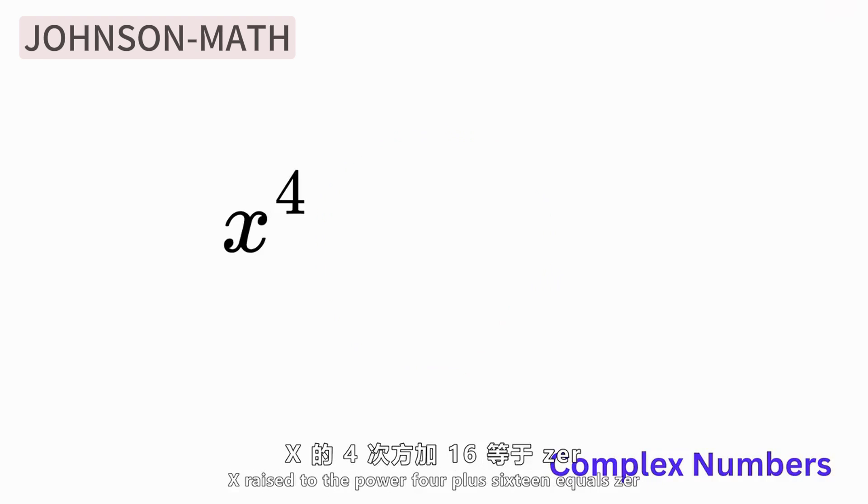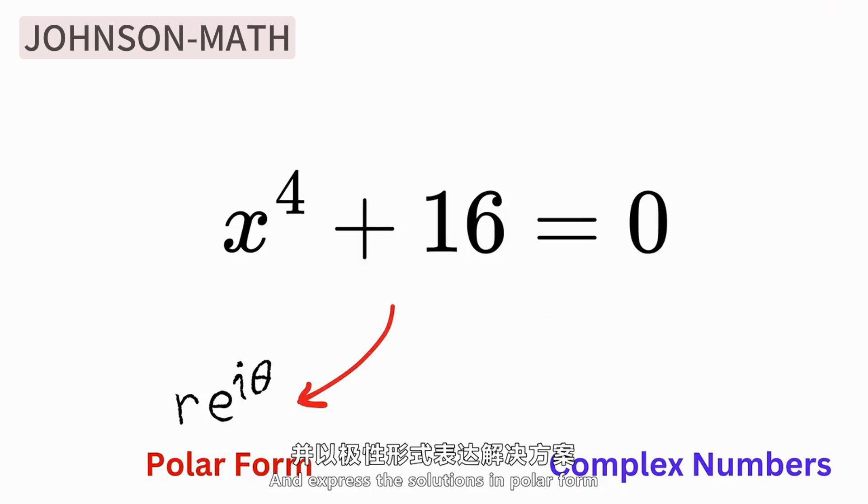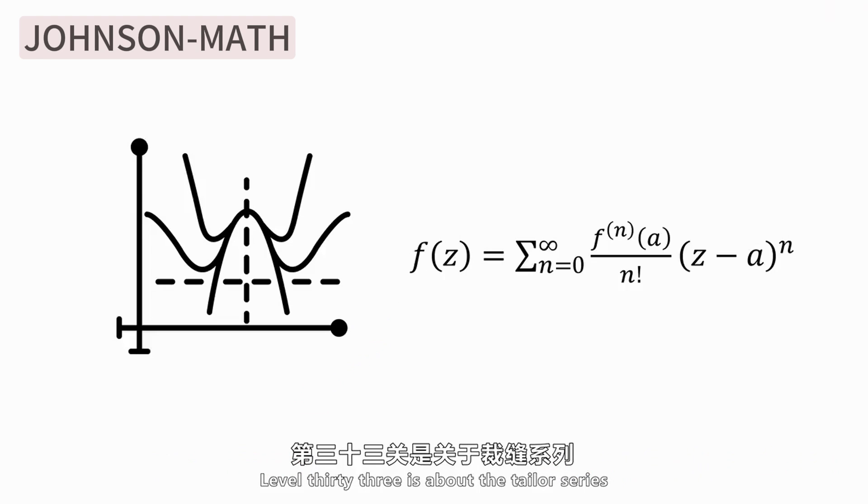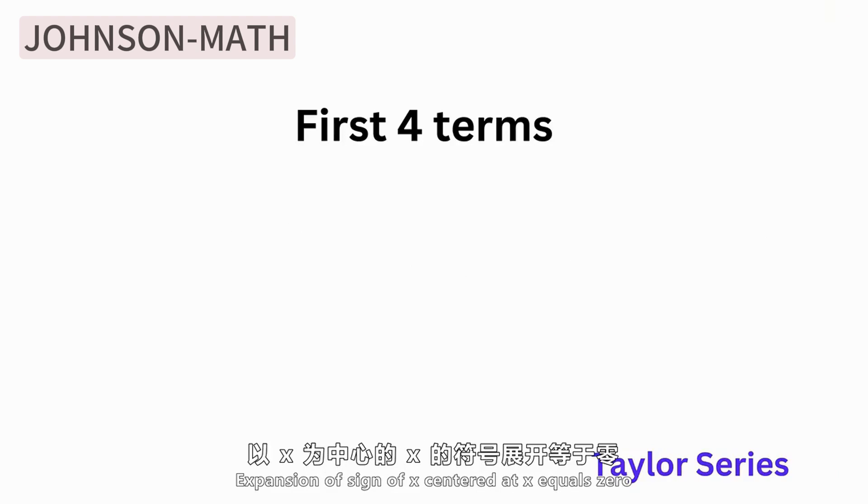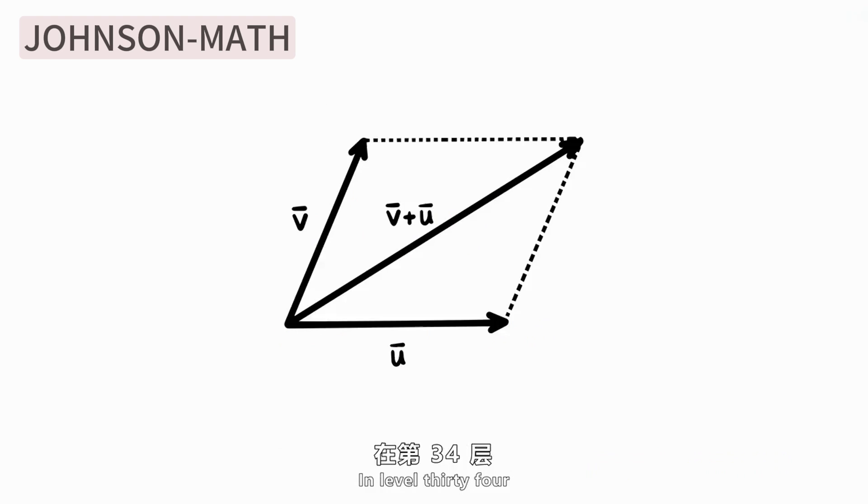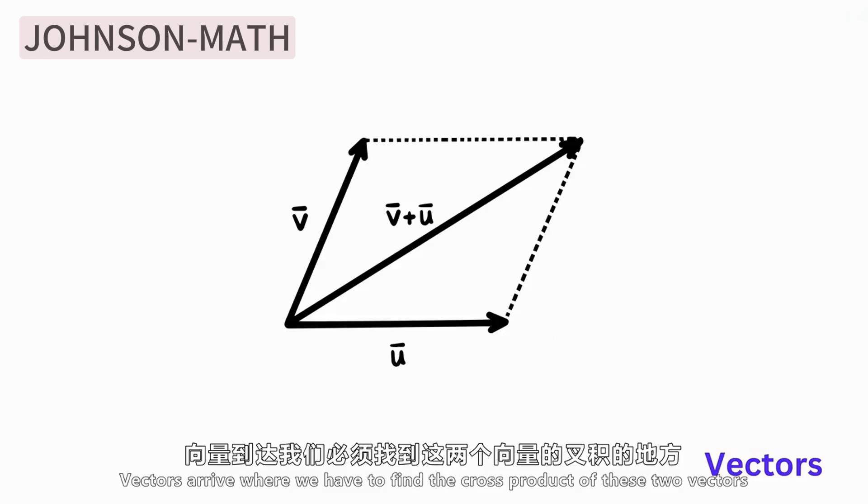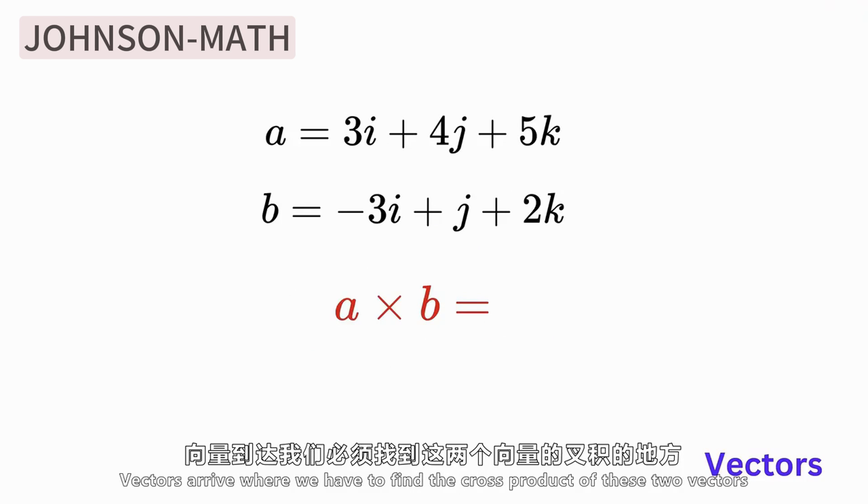Level 33, we'll learn Taylor series. Find the Taylor series of sine with x equal to 0 as the center, the first four terms of the expansion. Level 34 starts to involve vectors. We need to find the cross product of these two vectors.